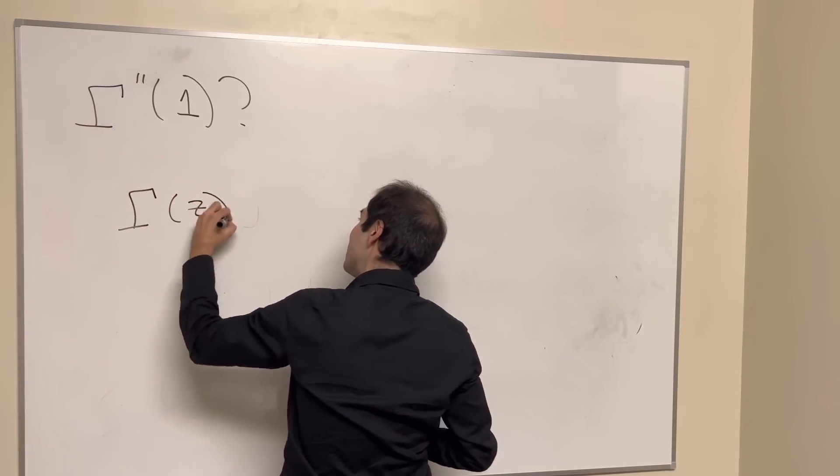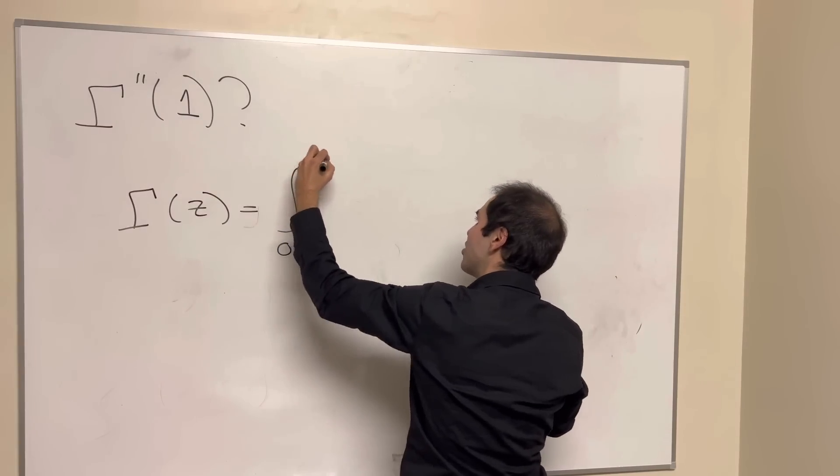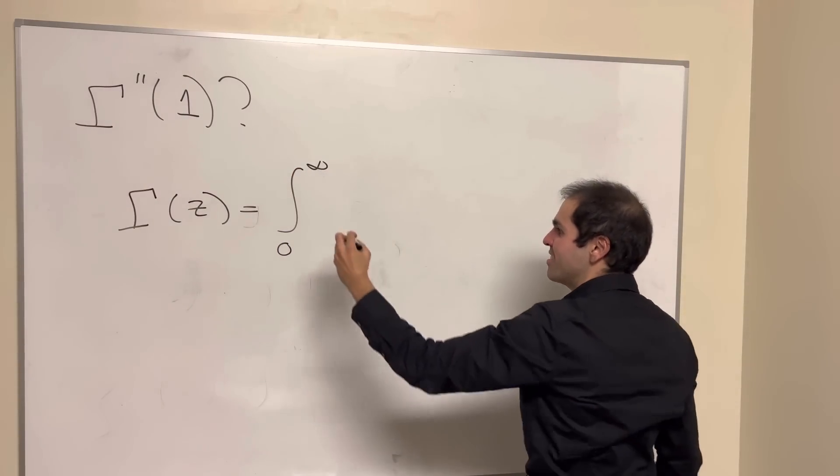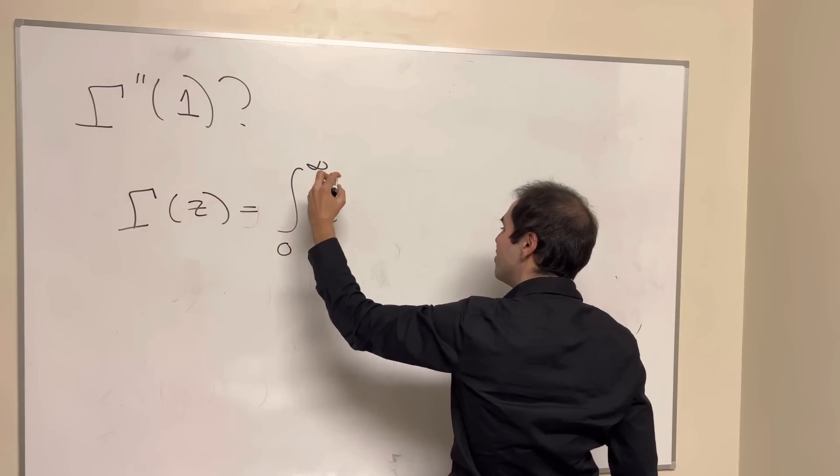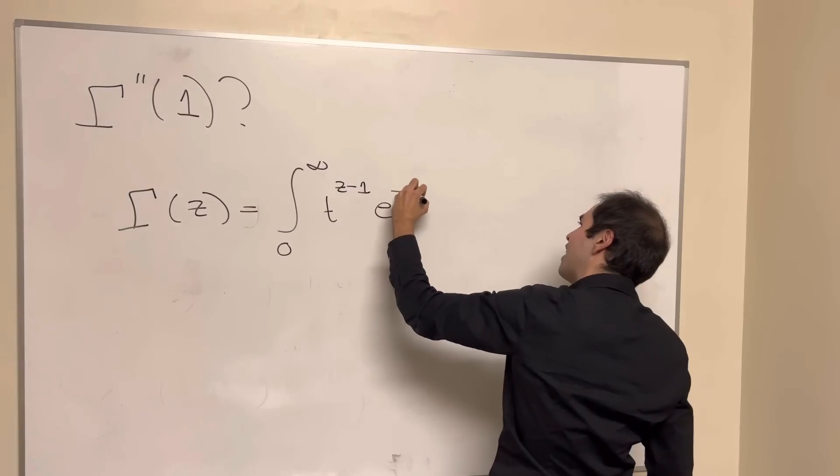I would like to remind you what is the gamma function. Well, it's a generalization of the factorial, and more precisely, it's an integral from zero to infinity of t to the z minus 1 e to the minus t dt.